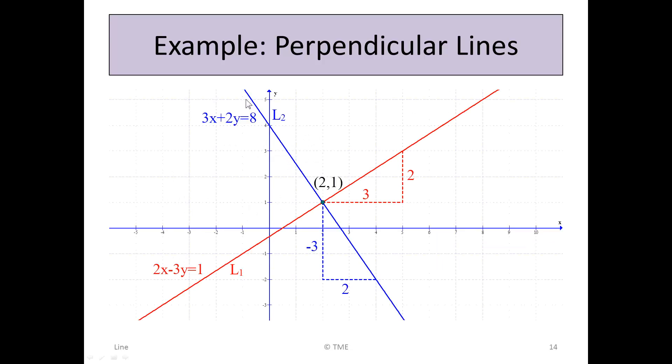Here we can see a picture of it. Here's the original line, 2x - 3y = 1, which goes through the point (2, 1). And here is L₂ perpendicular to it.